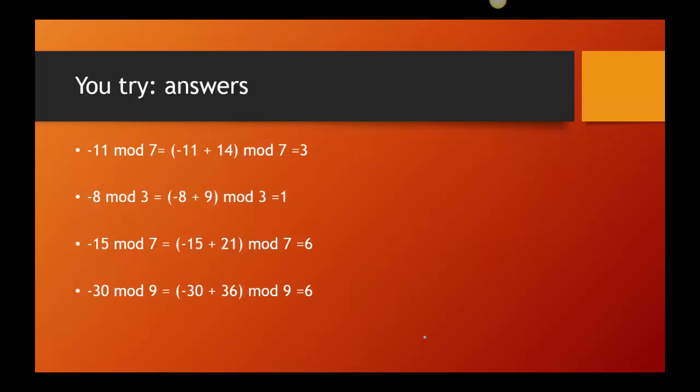Alright. So, here's what I did. So, I said negative 11 mod 7. I thought 7. Next one is 14. So, I did negative 11 and 14. And it gave me 3. I said negative 8 mod 3. So, I decided to add 9. That gave me 1. For negative 15 mod 7, I added 21, which gave me 6. And on the last one, I gave you negative 30 mod 9. So, I added 36. And then negative 30 plus 36 gave me 6. Alright. So, that's it. Hope that really helped.